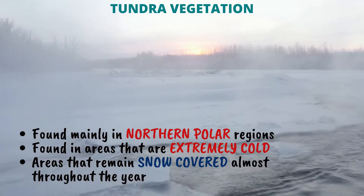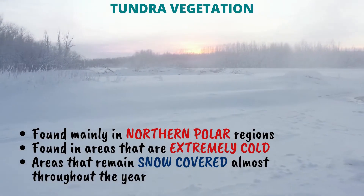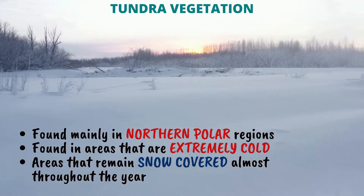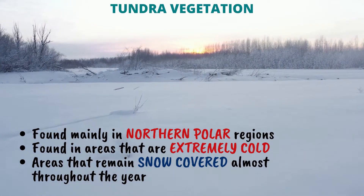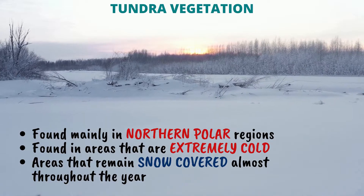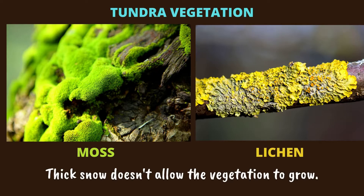Tundra vegetation — where can you find it? In the northern polar regions and in areas that are extremely cold, areas that remain snow-covered almost throughout the year. Look at the beautiful picture — what do you see? Moss and lichen. Yes, these are plants that grow in the tundra regions.